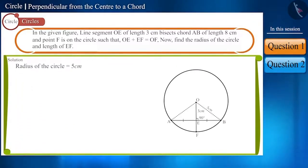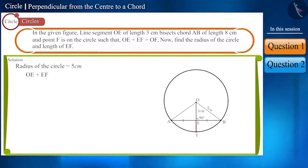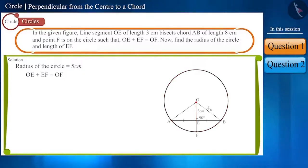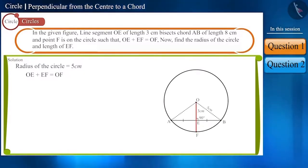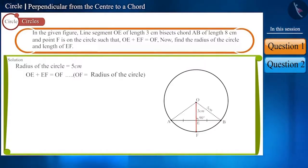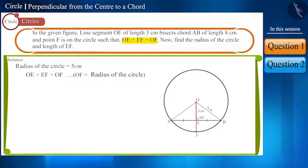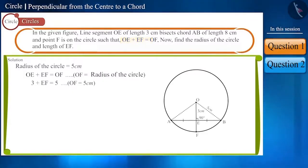Now, we have to find the length of EF. Given that point F is on the circle such that OE and EF joined together give OF. We know that a line segment from the center of the circle to any point on the circle is the radius of that circle. Hence, OF is the radius, which will also be 5 cm. We know the length of OE, so by putting the values of OE and OF, we can find EF. In this way, we found EF to be 2 cm.